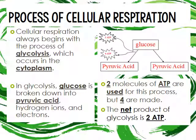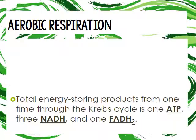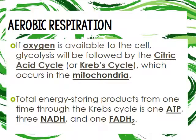The net product of glycolysis is two ATP since we're creating ATP through cellular respiration. For aerobic respiration, if oxygen is available, glycolysis is followed by the citric acid cycle — the Krebs cycle — which occurs in the mitochondria. The total energy-storing products from one turn of the Krebs cycle are one ATP, three NADH, and one FADH₂.